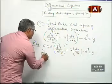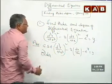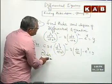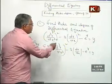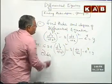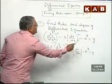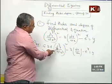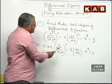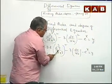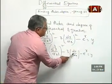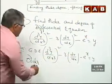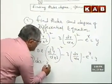What is the order? Recall the definition of order: order is the highest order of the derivative appearing in the differential equation. The highest derivative is d³y/dx³ — that is third order. The other term is first order. Among 1 and 3, the highest order is 3. So the order is 3.